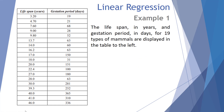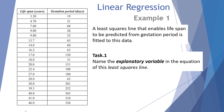The data we have here — the lifespan in years and the gestation period in days for 19 types of mammals — are displayed in the table to the left. A least squared line that enables lifespan to be predicted from gestation period is fitted to this data. Our first task is to name the explanatory variable in the equation of this least squared line.